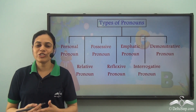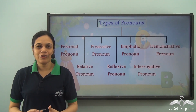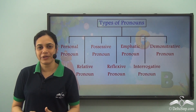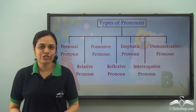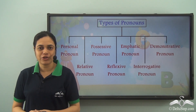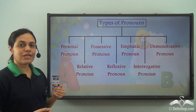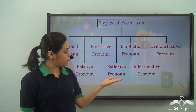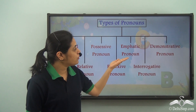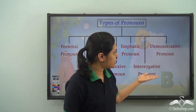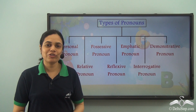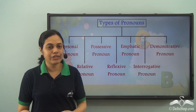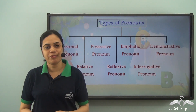We already know what pronouns are. Pronouns are the words that come in place of nouns to avoid repetition. We have also learned the different types of pronouns: personal pronoun, relative pronoun, possessive pronoun, reflexive pronoun, emphatic pronoun, interrogative pronoun, and demonstrative pronoun. Now let us see different examples of each type of pronoun.